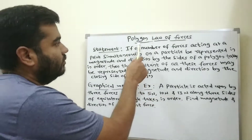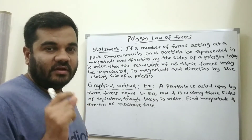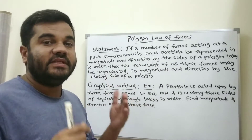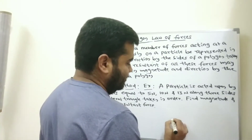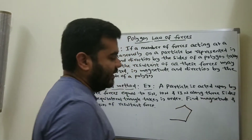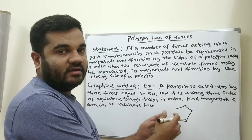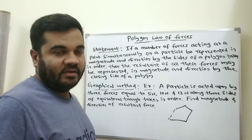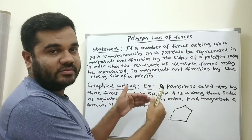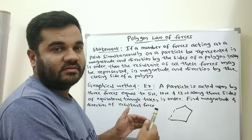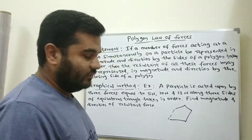Today we will discuss the polygon law of forces. If a number of forces are acting at a point, we need to find the resultant of these forces using the polygon method. A polygon has many sides, and we represent the number of forces in terms of a polygon. First we will see the statement, then solve one problem to understand how to apply the polygon method.